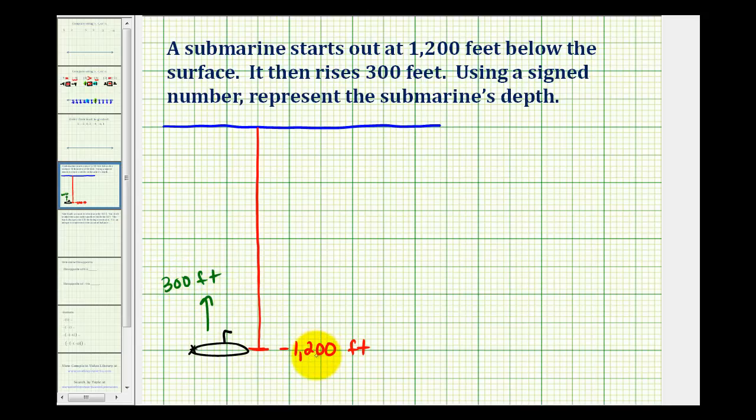If the submarine rose 100 feet, it would be at negative 1,100 feet. If it rose 200 feet, the position would be negative 1,000 feet. So if the submarine rises 300 feet, the position would be at negative 900 feet, meaning it's 900 feet below the surface.